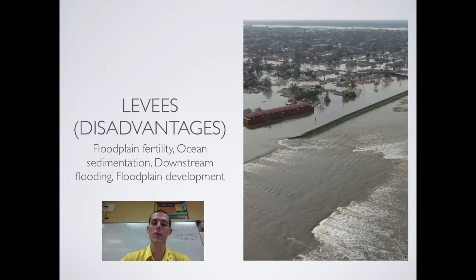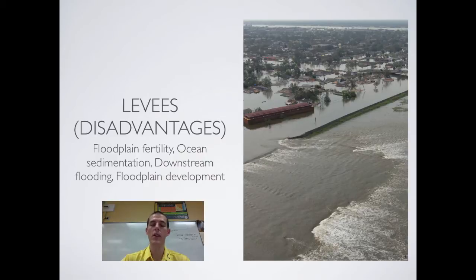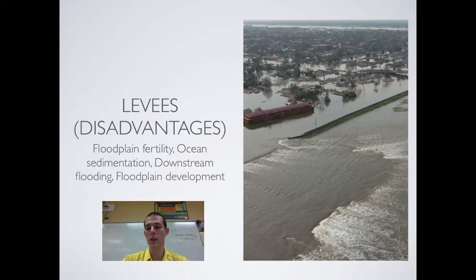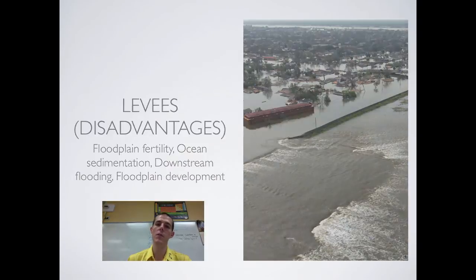Another drawback is development on the flood plain. If you've built a levee, people can farm and build houses there, but if a severe storm causes the levee to break, that area will flood. This is what we saw in Hurricane Katrina — a series of levees keeps New Orleans dry, but when the hurricane pushed a storm surge up the river the levees couldn't handle it. When they broke, water flooded the normal flood plain, filling those developed areas like a fishbowl.